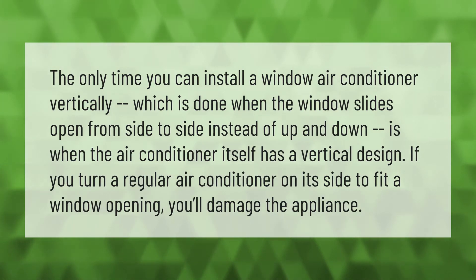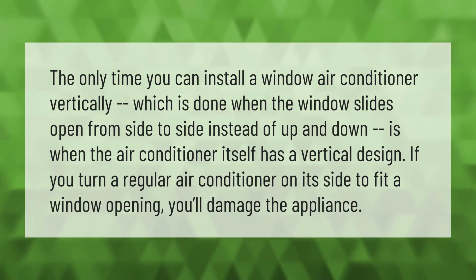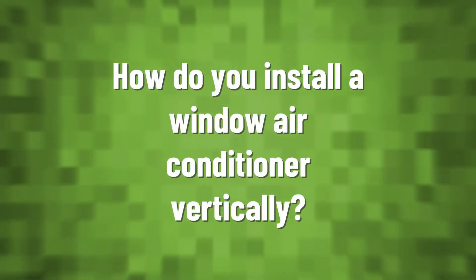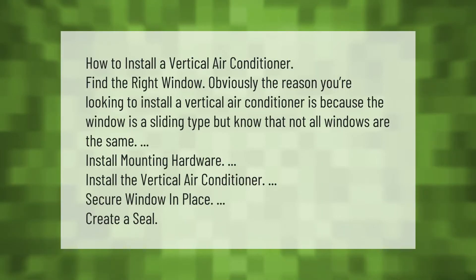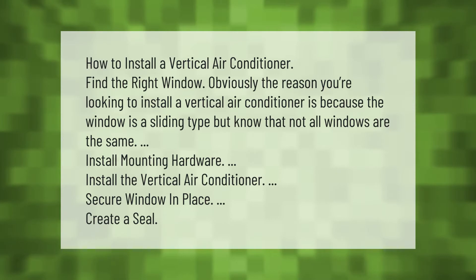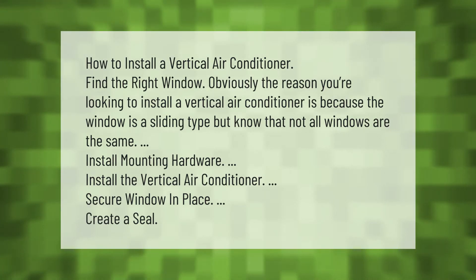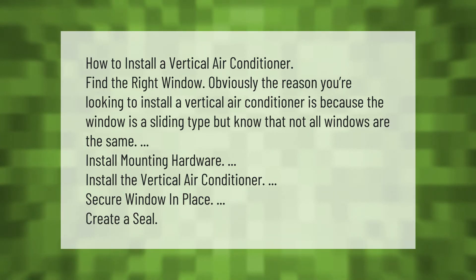If you turn a regular air conditioner on its side to fit a window opening, you'll damage the appliance. How to install a vertical air conditioner: find the right window. The reason you're looking to install a vertical air conditioner is because the window is a sliding type, but know that not all windows are the same. Install mounting hardware, install the vertical air conditioner, secure the window in place, and create a seal.